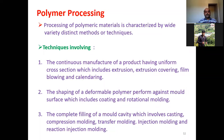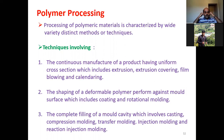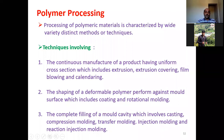Different polymers have different processing techniques. There are three distinct methods. The first involves continuous manufacture of a product having a uniform cross section, which includes extrusion, extrusion covering, film blowing, and calendaring. The second involves shaping a deformable polymer against a mold surface, which includes coating and rotational molding. The third is complete filling of a mold cavity, which involves casting, compression molding, transfer molding, injection molding, and reaction injection molding.